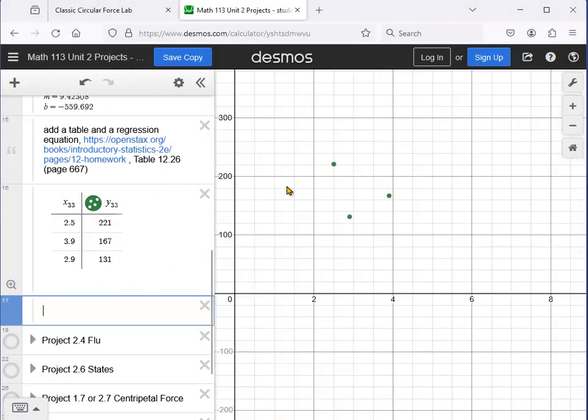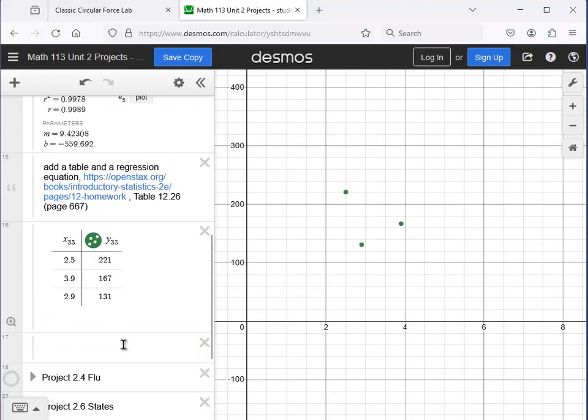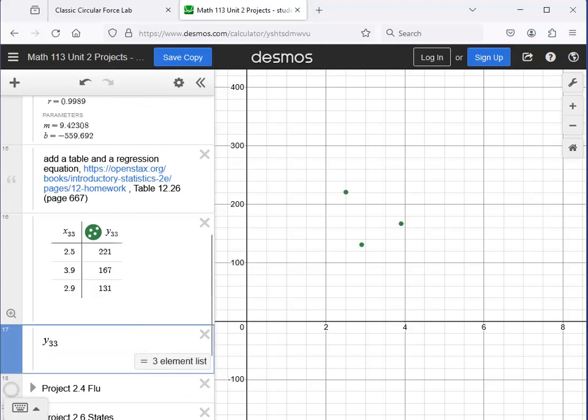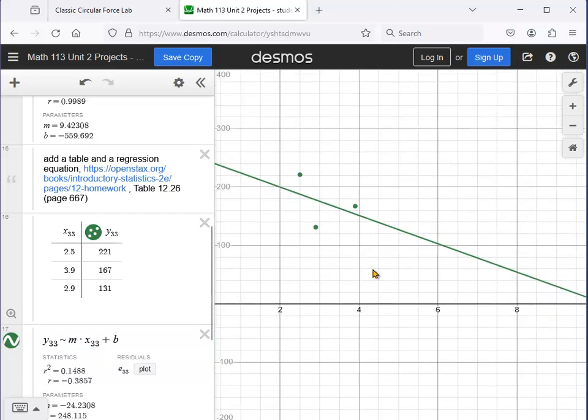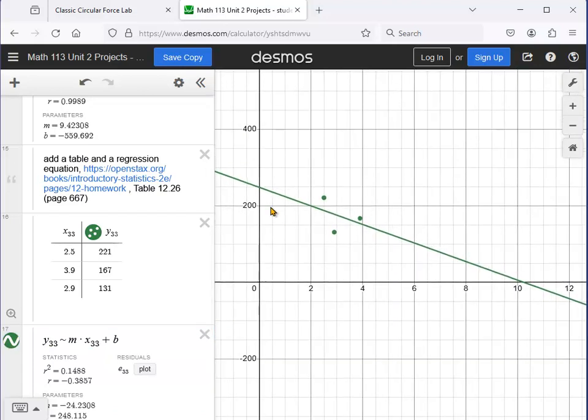So you should also try this one here: y33 proportional to m times x33 plus b. Yes, I did notice that I hit the wrong key there - proportional. And that was this triangle, doesn't make sense. But you will see that there will be more data here that will make for a certain straight line.